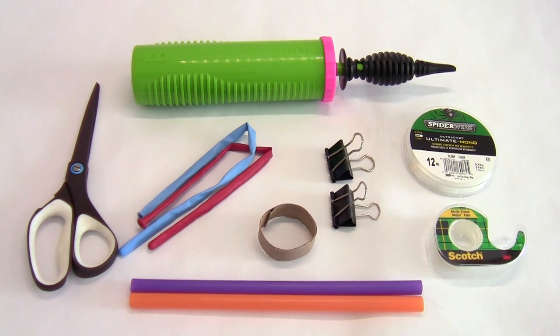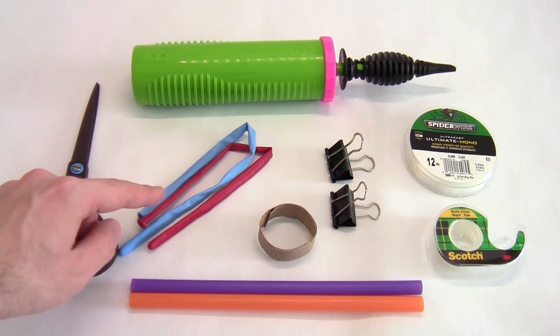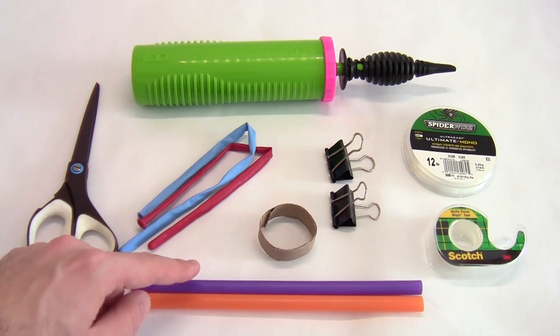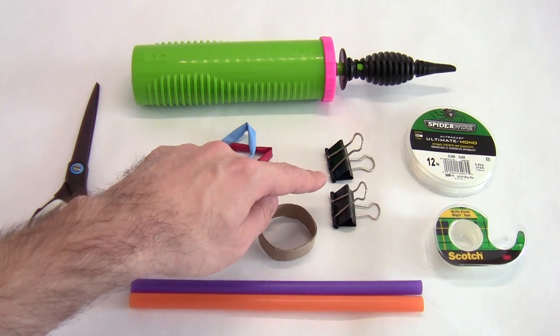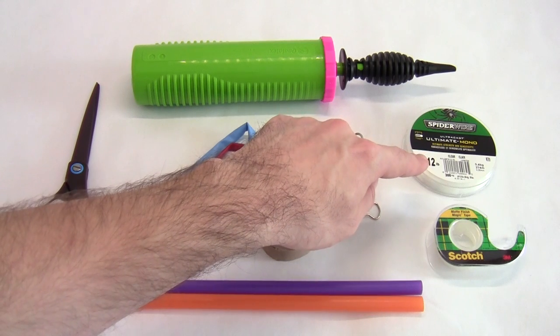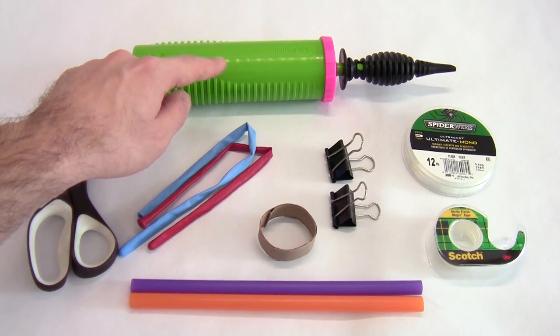To do the activity, you will need scissors, two modeling balloons (which are the long, skinny kind used to make balloon animals, not the round kind), two milkshake straws, a small ring cut from a paper towel tube, two large binder clips, tape, fishing line or smooth string, and a balloon pump to make it easier to inflate the balloons.